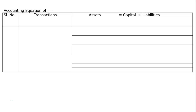The question asks us to prepare an accounting equation from the following transactions. The format of the accounting equation has columns for serial number, transactions, assets — which equals capital plus liabilities. After reading the question properly, we identify assets like cash and stock, and liabilities like capital, creditors, and outstanding rent, all with rupee symbols.